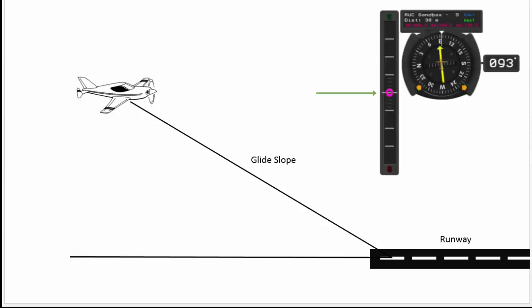What you're looking at here is the horizontal situation indicator, and what it's showing you is that purple dot in the center. That purple dot is appearing right at the center of the glide slope indicator, so that indicates that the plane is at the right altitude for the right distance from the runway.